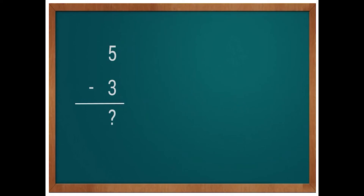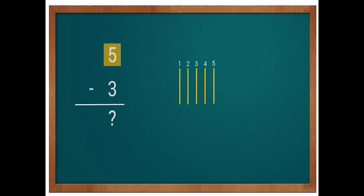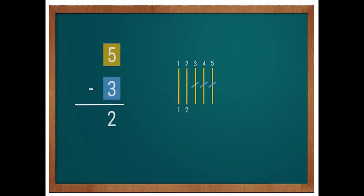Our next question is five minus three. First write the number five, then write the number three just below the number five. Don't forget to write the minus sign. Here the first number is five, so draw five lines. Now we have to subtract three from five, so we have to remove three lines from the five lines. Now how many lines are left? Yes, two lines are left. So five minus three is equal to two.